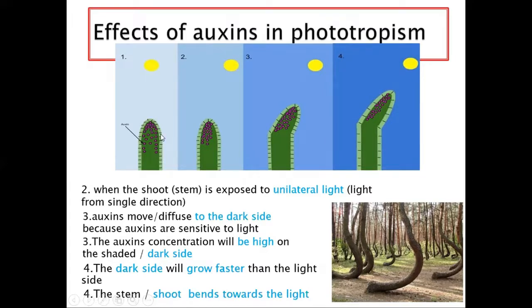The stem bends towards the source of light. So: auxins start evenly distributed, they migrate to the dark side, the dark side grows faster because it has more auxins, and the shoot bends towards the source of light — that's how auxins cause the bending effect.